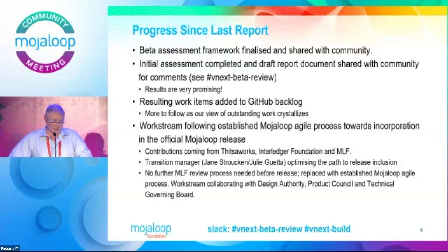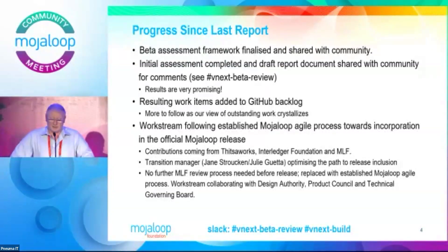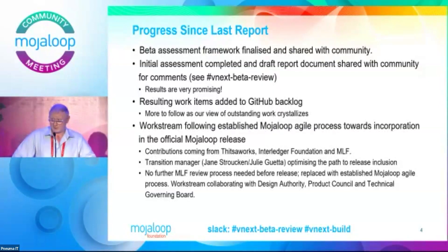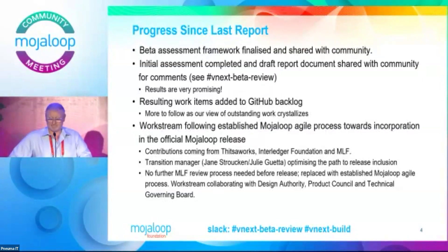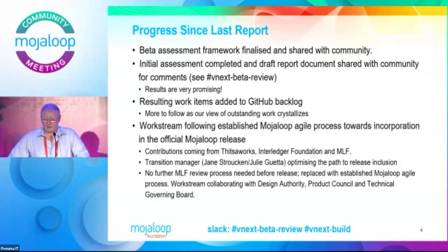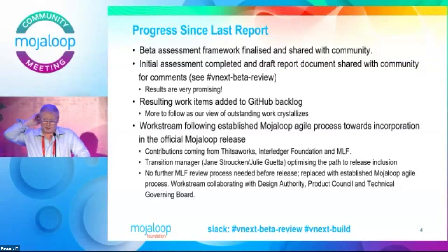Because this is such a significant change, we have engaged the services of a transition manager to help us figure out the road from here to there. The observant among us will have noticed Julie Goethe joining the MojoLoop Foundation recently. But in the weeks and months before this, Jane Struchen from Infotex has stepped in. So we're very grateful to Jane for helping us in the short term until Julie takes over — we're transitioning our transition manager. We're trying to optimize the path from the beta release towards production, and we don't want to have another stop-the-world review process. By changing into the standard MojoLoop work stream agile process, we can avoid that completely.